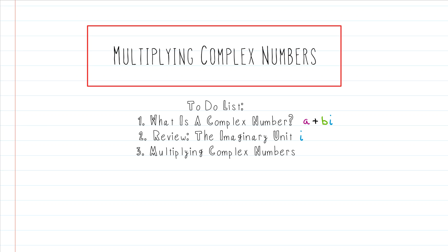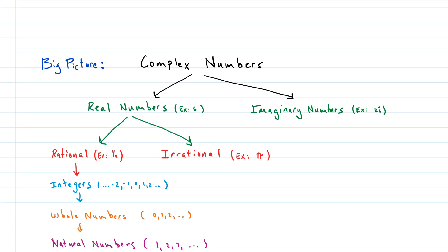Hey everyone, it's Bradley Bush with another algebra video. Today we're talking about multiplying complex numbers. Our to-do list: first, what is a complex number — we'll talk about a plus bi form and give you a little review on that. Then we'll review the imaginary unit i, just in case you're not sure what i means. Then we'll give you a couple of examples of multiplying complex numbers. I'll also put timestamps for each part in the video details so you can skip ahead if you like.